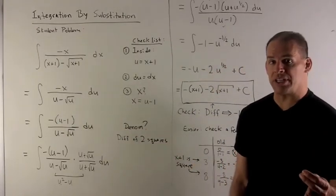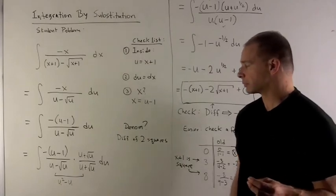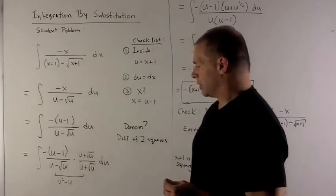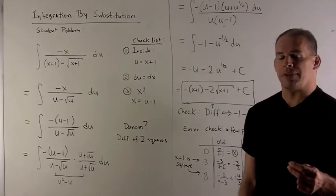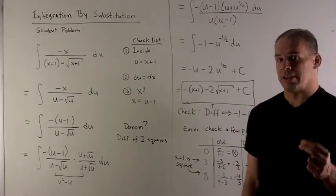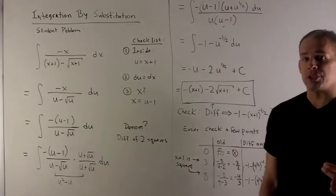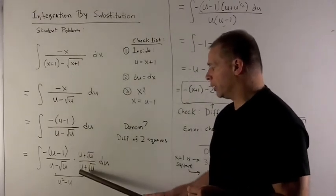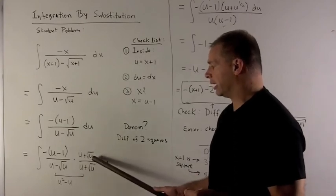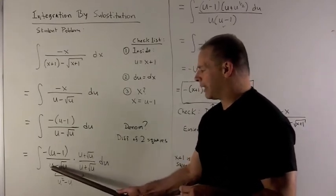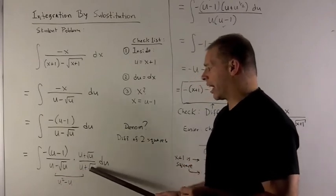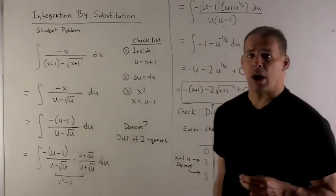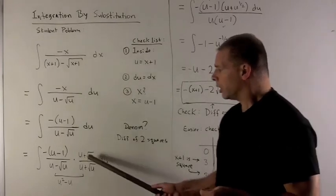Be sure to use parentheses, otherwise we'll mess up the minus signs. Now, it's not clear what we would do with u minus square root of u. So, thinking back to some of the tricks we have, we can do a difference of two squares. I'm going to multiply my integrand by 1 in the form of u plus square root of u over u plus square root of u — that doesn't change anything — but when I multiply the denominator, we have a difference of two squares, so it's going to be the square of the first minus the square of the second, and the square root sign goes away.